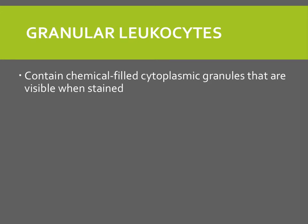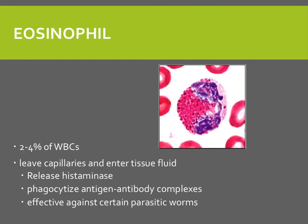Granular leukocytes are so named because they contain chemical-filled cytoplasmic granules that are visible when stained. The three types of granular leukocytes include eosinophils, basophils, and neutrophils. The eosinophil makes up about 2 to 4% of white blood cells. They stain red-orange and take up acid dyes, giving them the name eosinophil. They have a nucleus with two or three lobes. They release histaminase, which breaks down histamine and increases in allergic reactions. They phagocytize antigen-antibody complexes and are effective against certain parasitic worms.